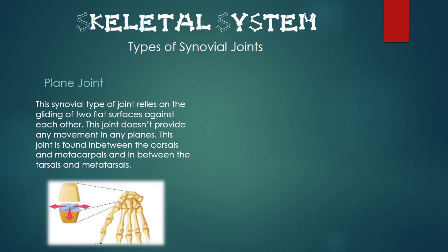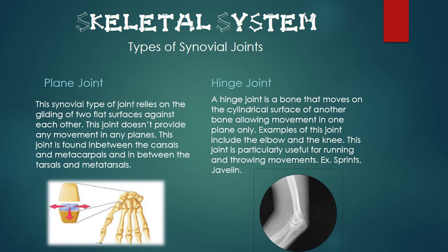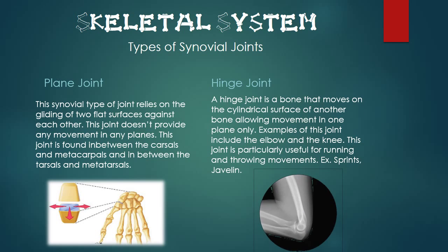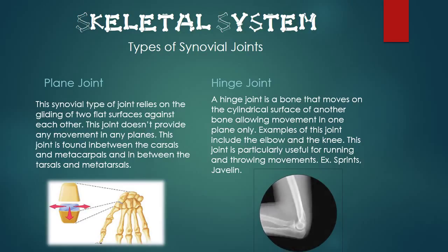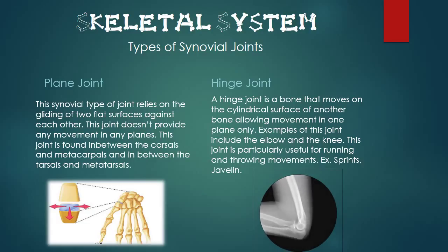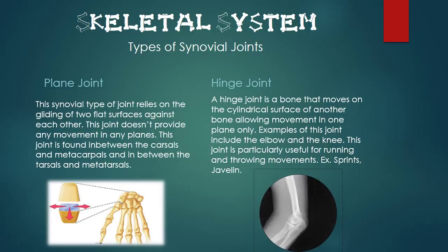The second type of synovial joint is the hinge joint. A hinge joint is a bone that moves along a cylindrical surface of another bone, allowing movement in one plane. Examples of this joint include the elbow and the knee. This joint is particularly useful for running and throwing movements such as sprints and javelin.